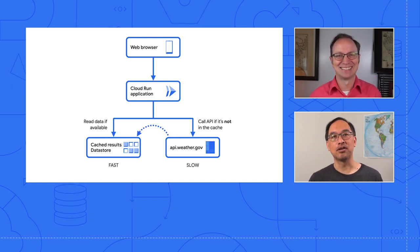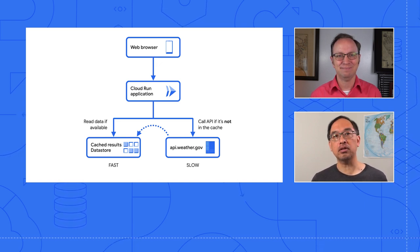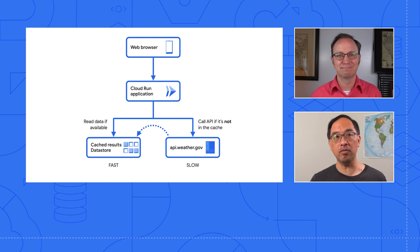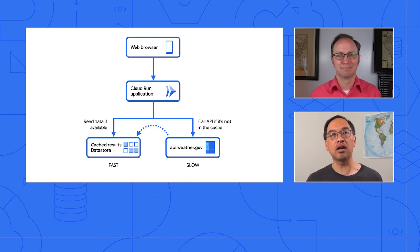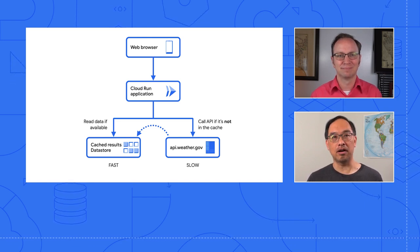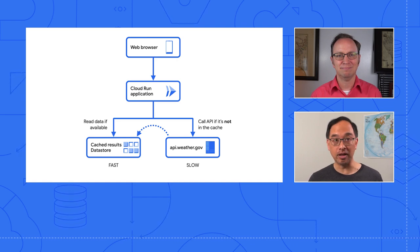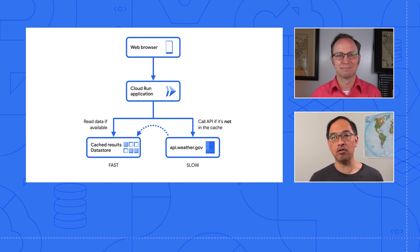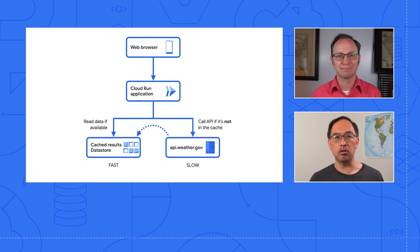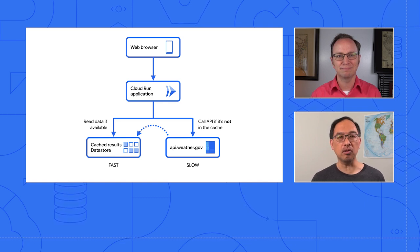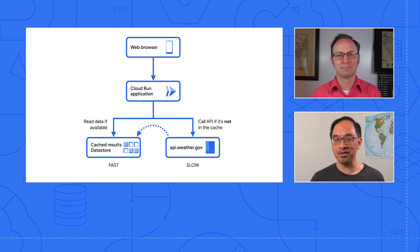Yeah, that's right. So I want to cache the weather alerts for all 50 states. While I could schedule a job with Cloud Scheduler that updates this cache every five minutes, now with Cloud Run and its always-on CPU, we don't have to do that. Normally, Cloud Run throttles the CPU after your service has responded. But with this new feature, we can keep the CPU at full capacity for background tasks like updating my cache. And on top of that, we get a discounted rate too.